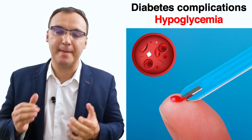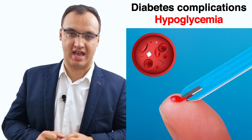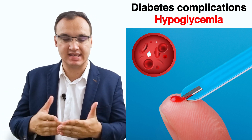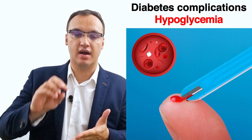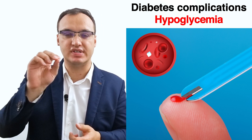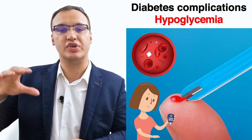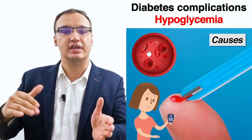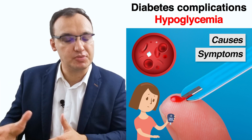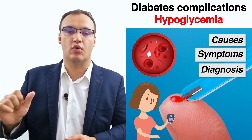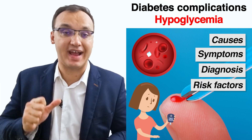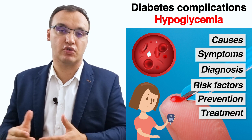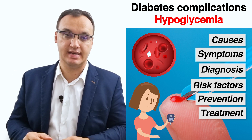Have you wondered why hypoglycemia happens? You can find that out in this video, because today we will discuss hypoglycemia that we see in adult patients with diabetes. We will cover how it occurs, the causes of it, the symptoms of it, the diagnosis, the risk factors, how we can prevent it, and also the treatment of hypoglycemia in adults.